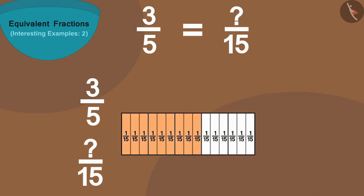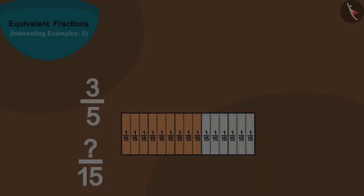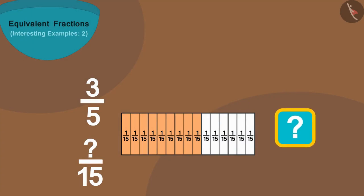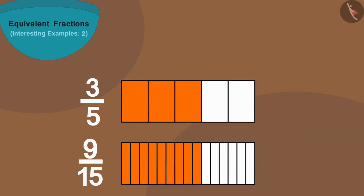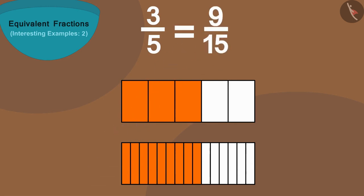Now if we put this strip on top of the first strip in this way, we will find that 15 parts of this strip are equal to 5 parts of the first strip. Can you now tell how many parts out of 15 are equal to 3 colored parts of the bottom strip? Let's see. Yes, 9 parts. In this way, 3/5 is equal to 9/15.